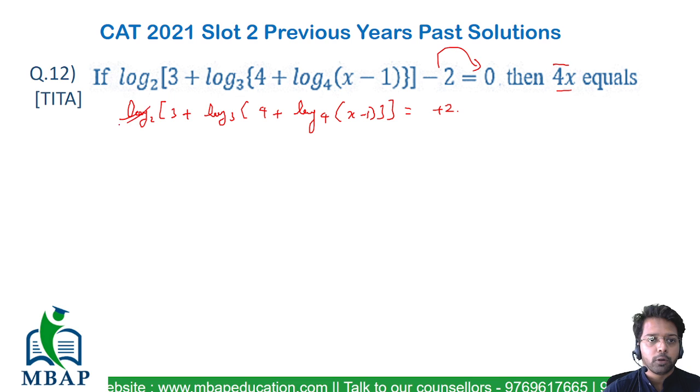Now let's remove log base 2 from this side. This whole expression will become 3 + log base 3 of (4 + log base 4 of (x - 1)).